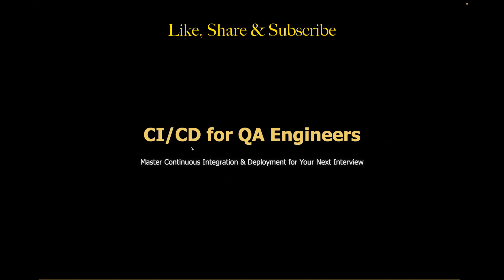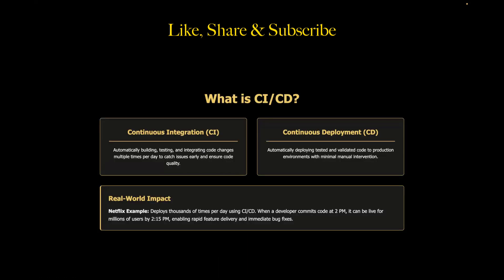Let's start with the basics first. CI/CD stands for Continuous Integration and Continuous Deployment or Delivery. In real terms, CI means automatically building and testing code changes multiple times per day. Instead of waiting until Friday to test everything together — which we all know can be risky — every single code change gets tested immediately. That means automatically building, testing, and integrating code changes multiple times per day to catch issues early and ensure code quality.